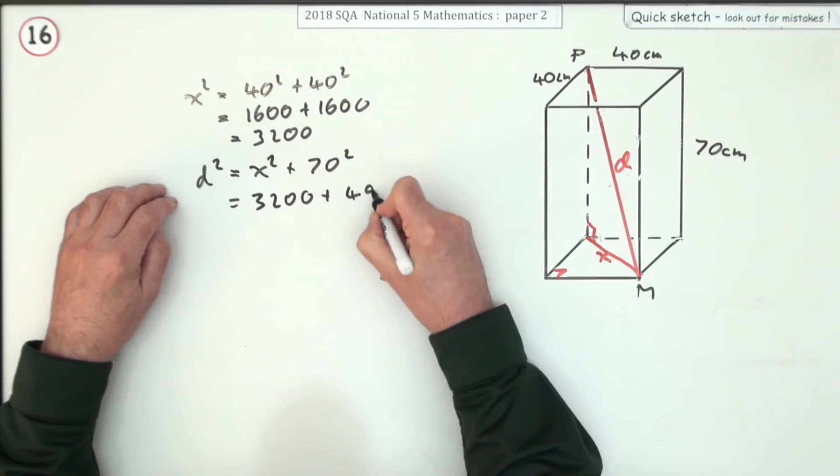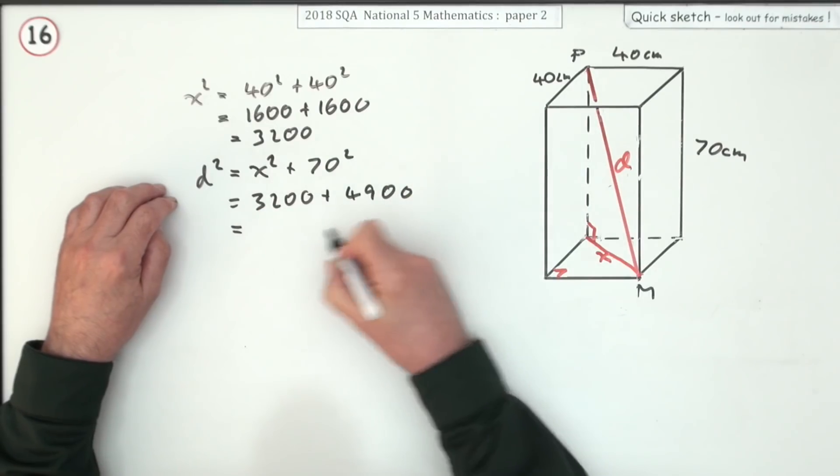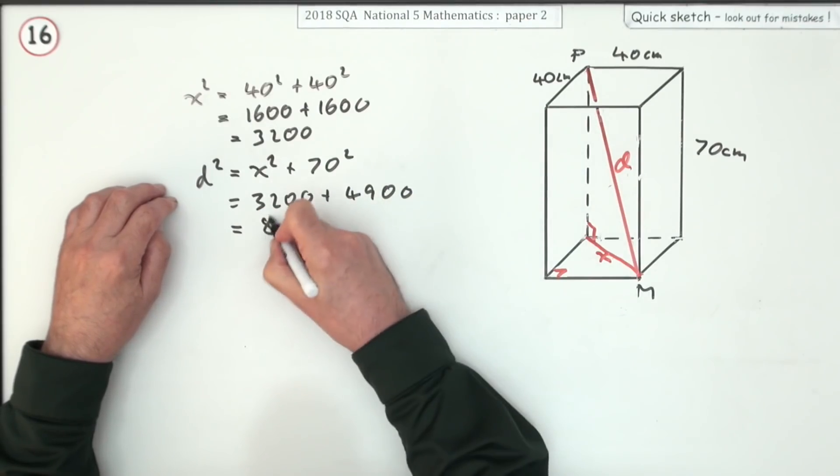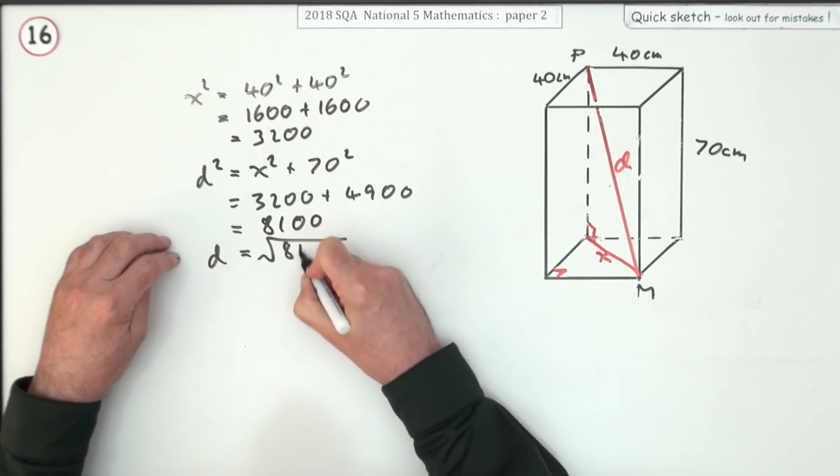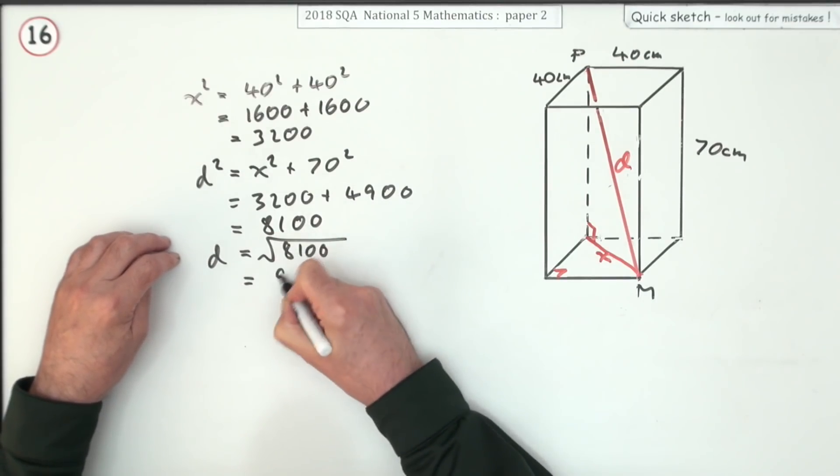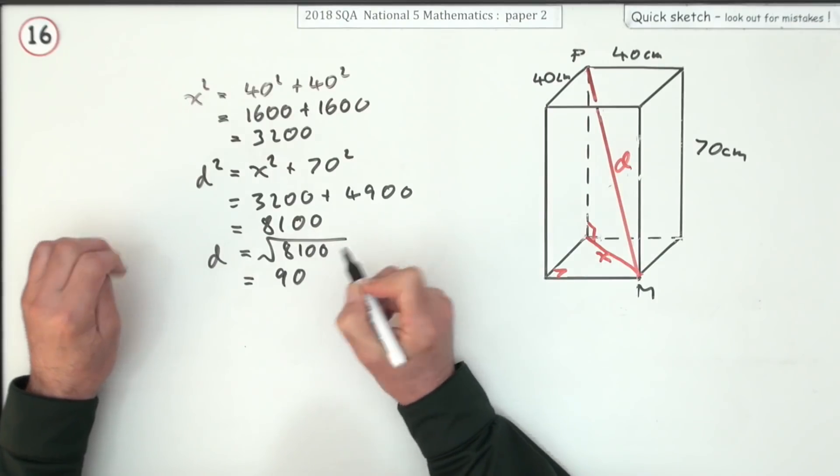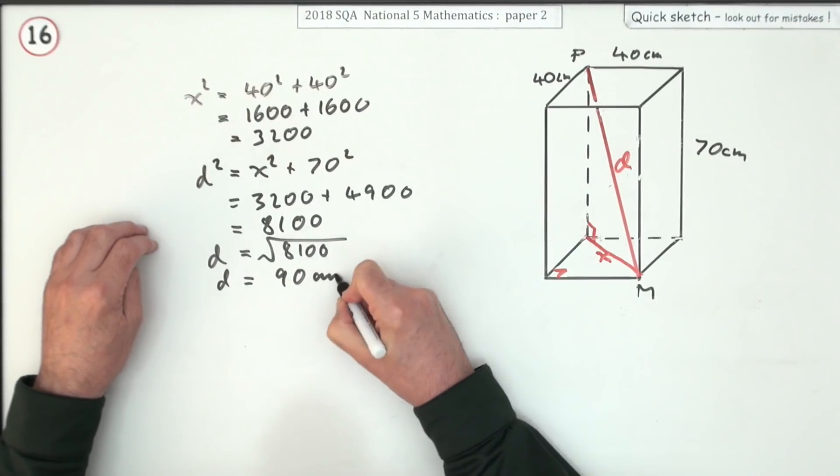So that's plus 4900, and 49 and 32 is 81, which is a very nice number because when you take the square root of 8100, it'll be 90. So it's 90 centimeters.